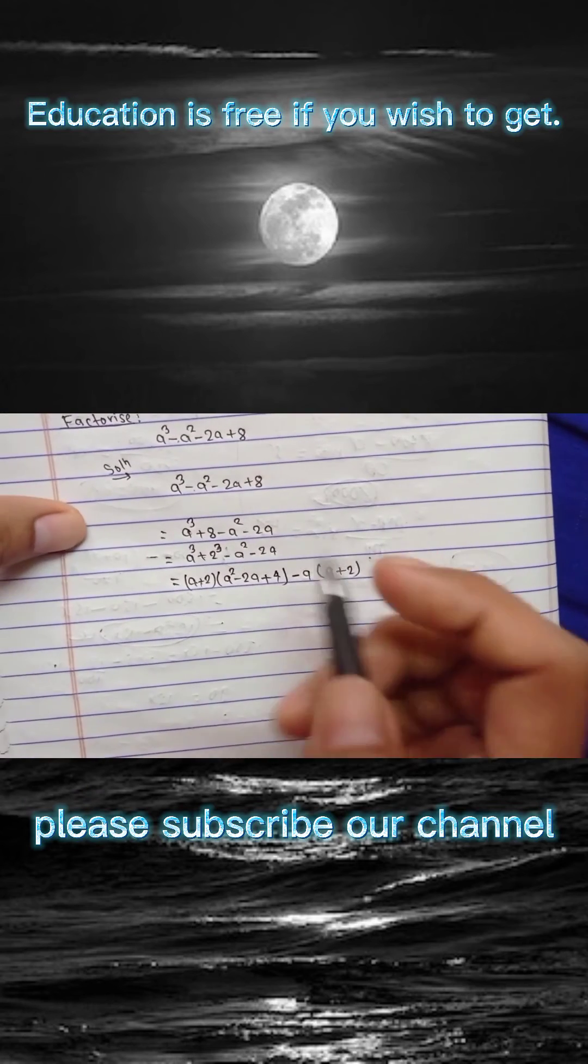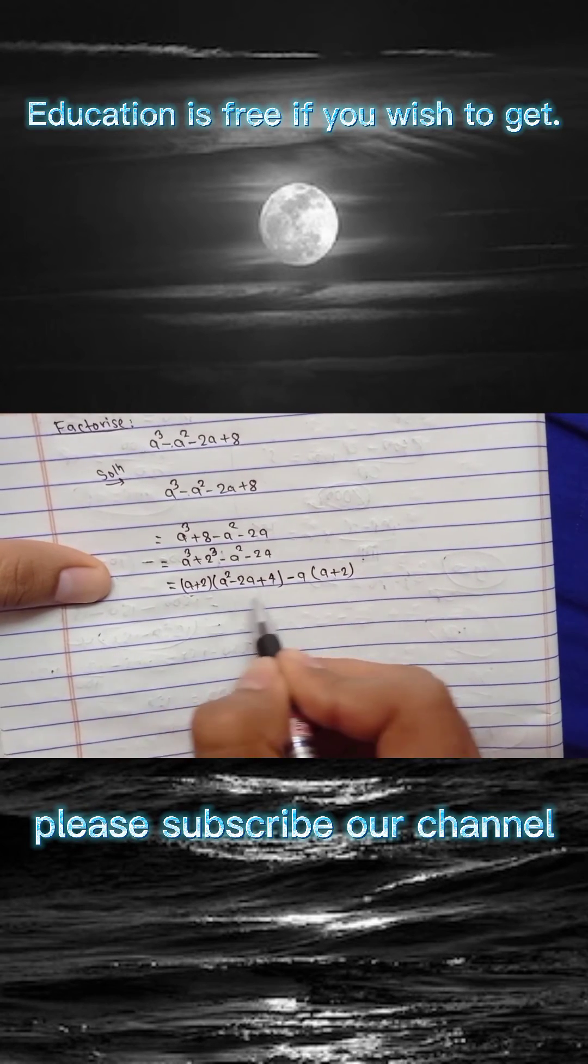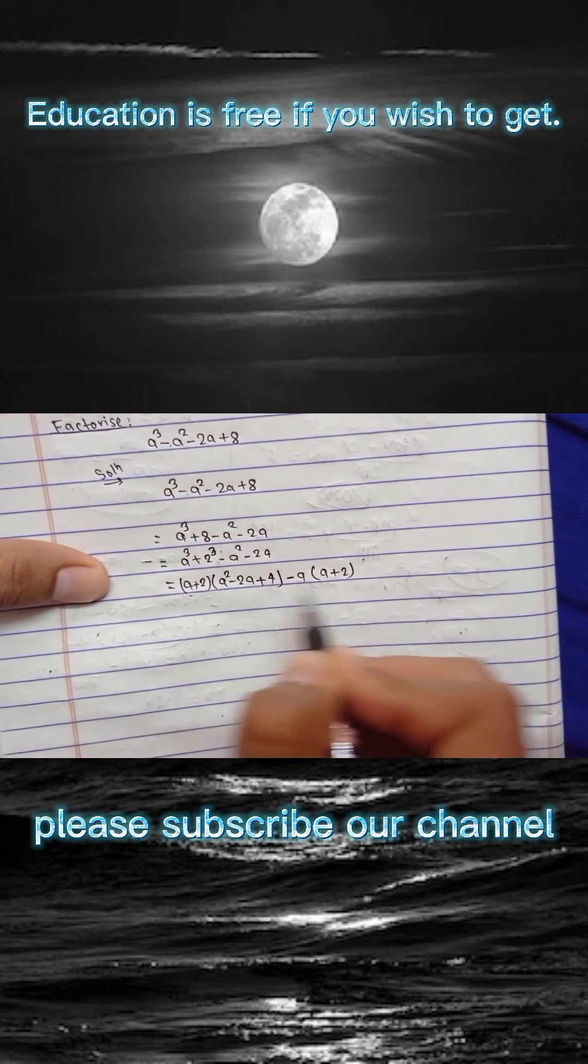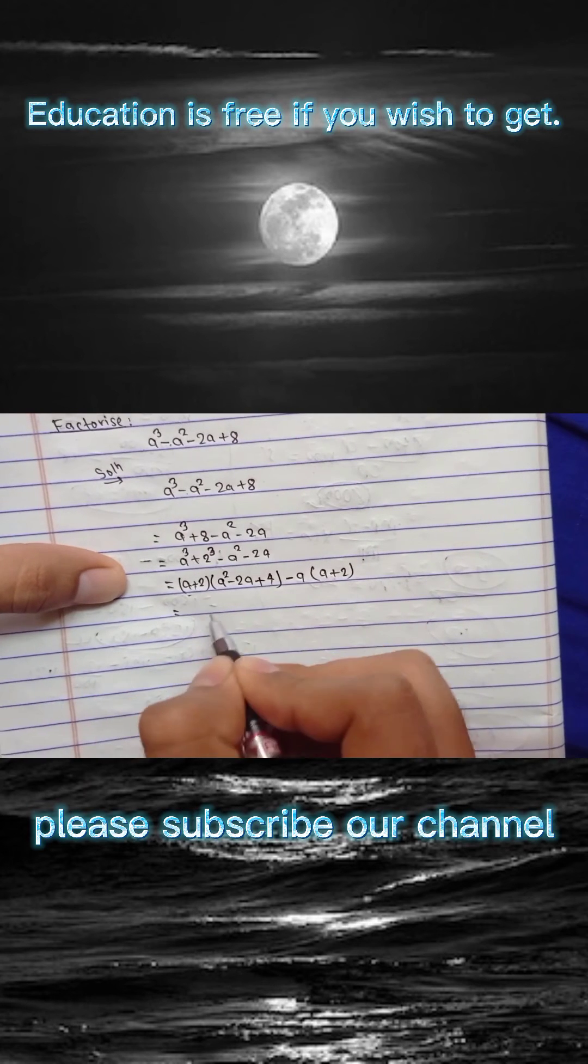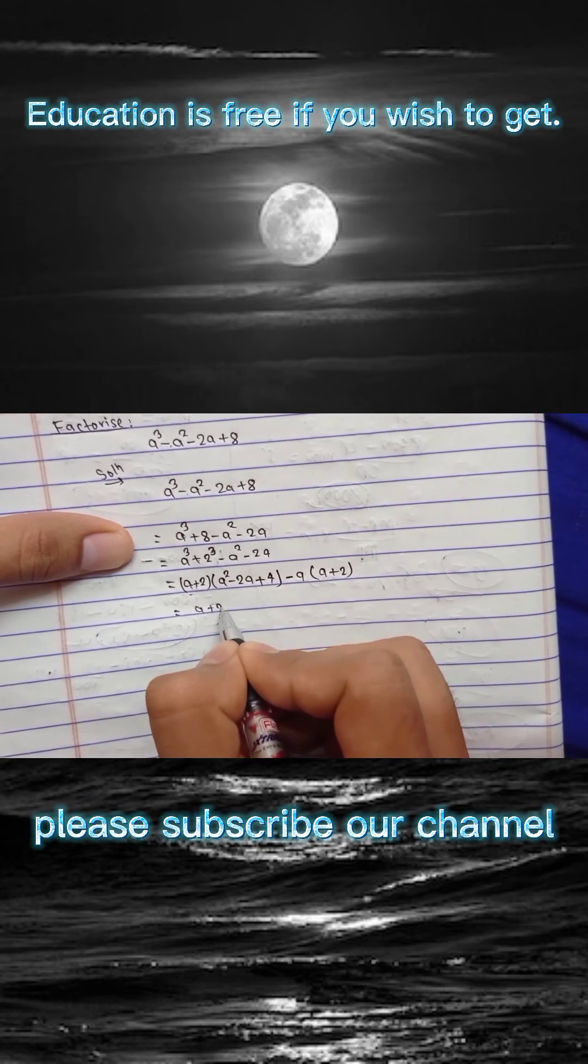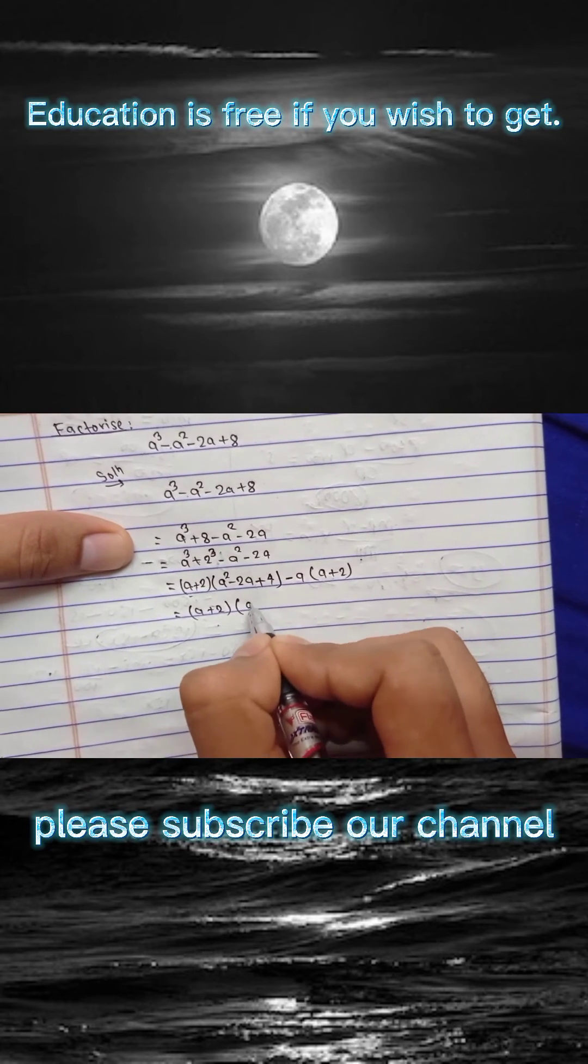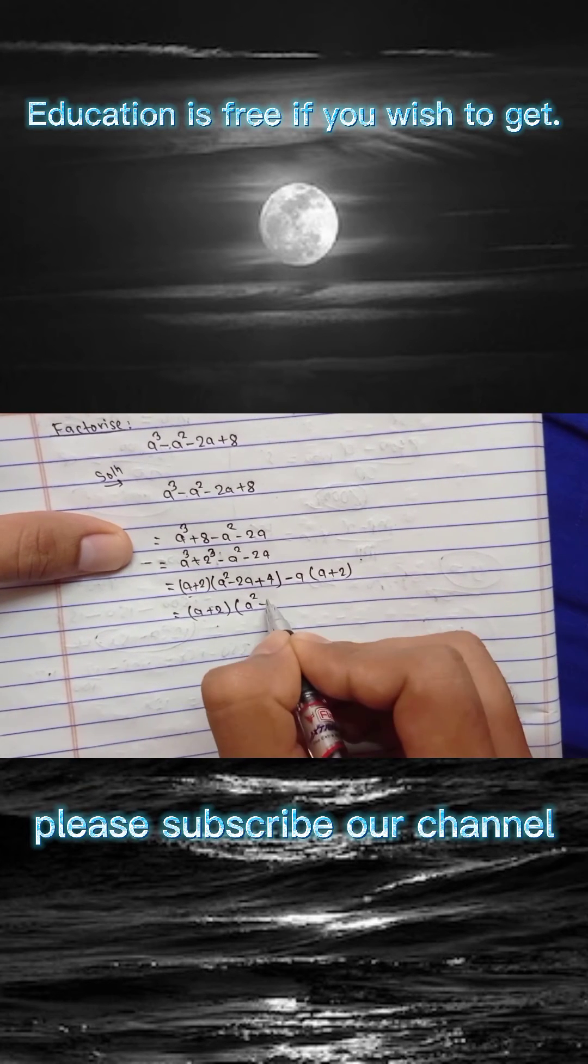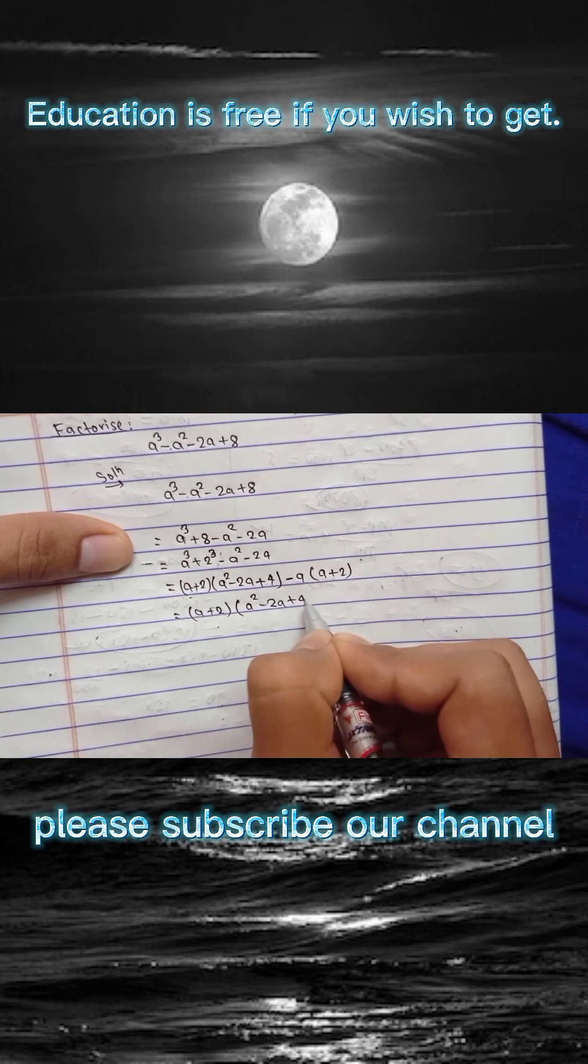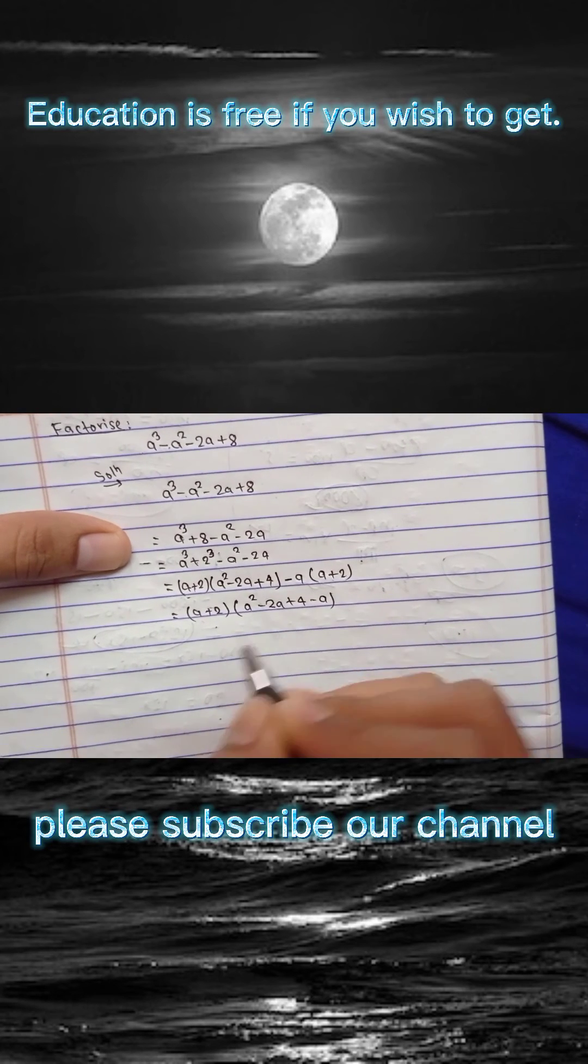And the next step, you can see here in this term and this term a plus 2 and a plus 2 is common, so take a plus 2 common. And remaining here a² minus 2a plus 4 and this minus a is here.